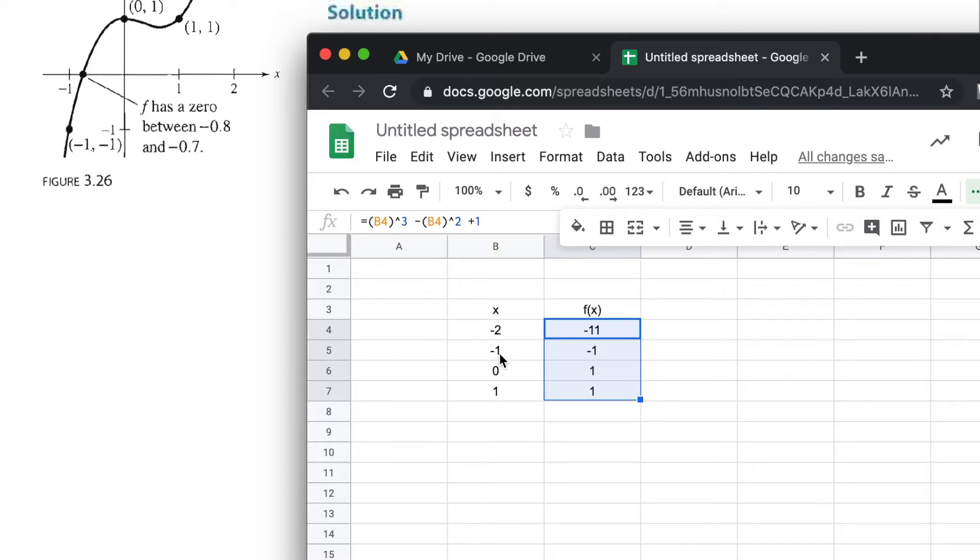The next thing we're going to do is drill down because we notice we go from -1 to 1. I'm going to go into tenths: -0.1, -0.2, etc.